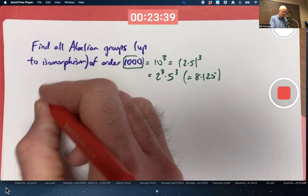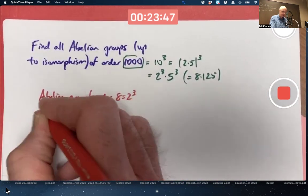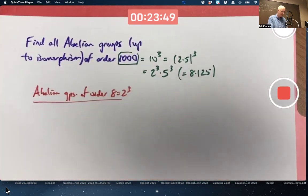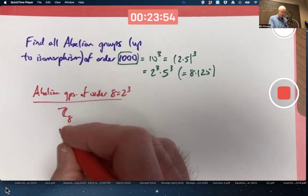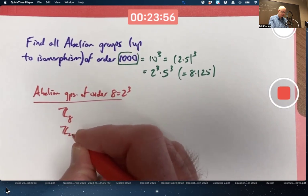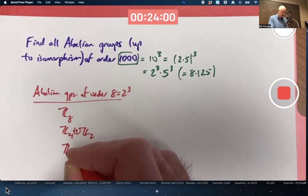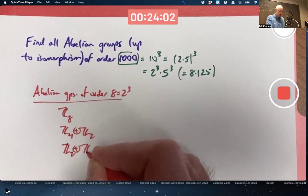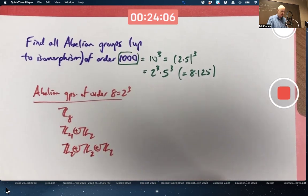So abelian groups of order 8, 8 equals 2 cubed. We did this kind of problem last time. There's Z8. There's the external direct product of Z4 with Z2, and the external direct product of Z2 with itself having three factors. And that's all of them.